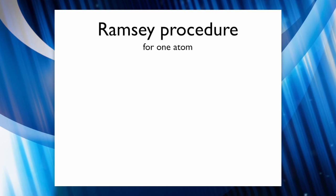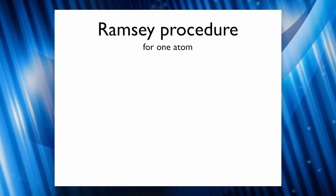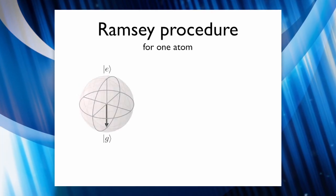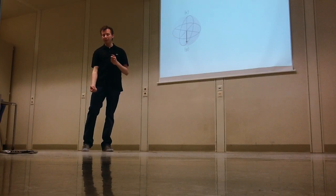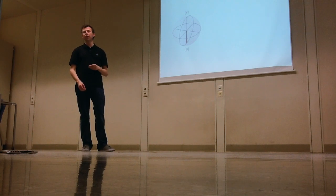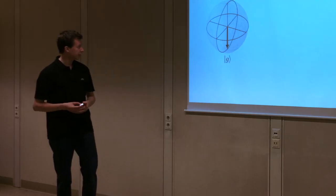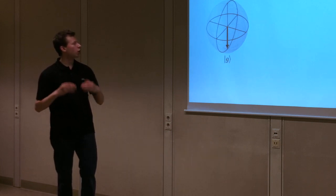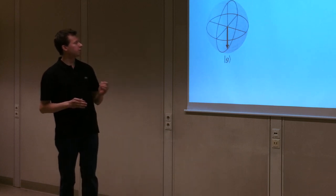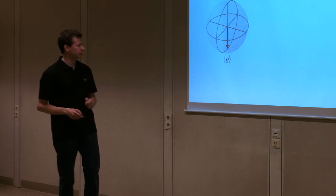Let me now talk about the Ramsey measurement technique that sits at the heart of an atomic clock. A tool we use in quantum physics to visualize a system consisting of two basic states is called the Bloch sphere, where the south pole represents the ground state with no energy in the system, and the north pole represents the excited state with the maximum amount of energy. With this, we can visualize all kinds of superpositions between the ground and excited state, and also all kinds of different phases between these superpositions.